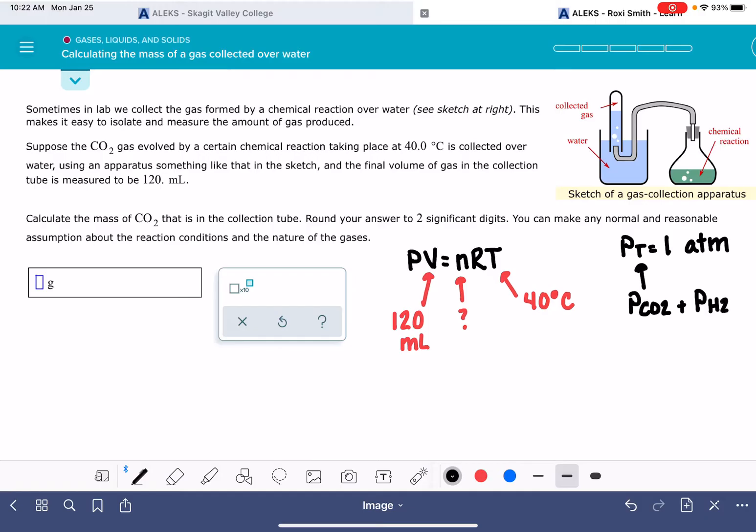It's also going to be the pressure of any water gas that might be evaporating above the surface of this water inside the collection tube. We really just need to know the pressure of CO2.